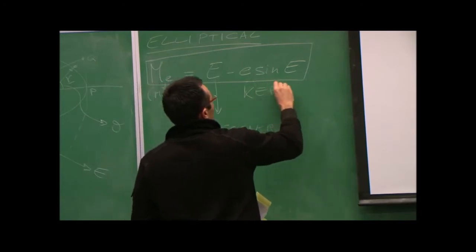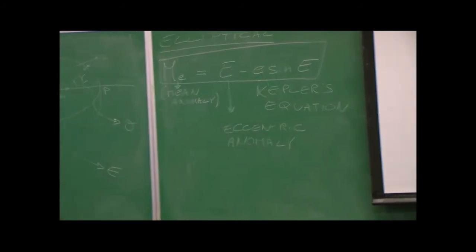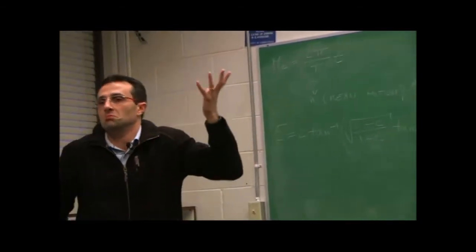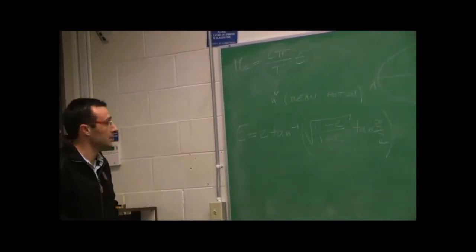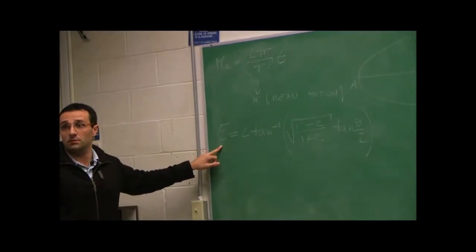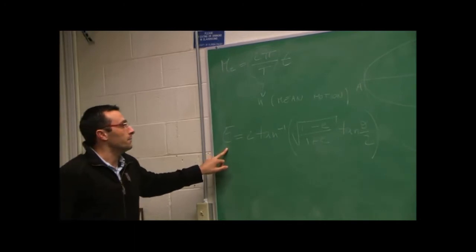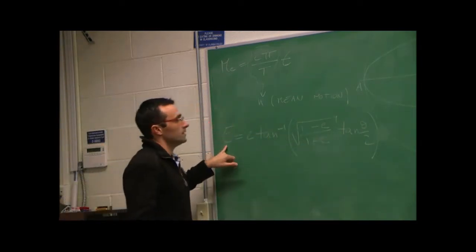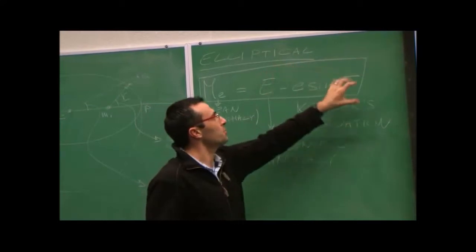Now, if I give you a true anomaly — say theta equals pi over 2 — and you want to compute time, that's a little bit of calculation but not a big deal. Substitute theta in here, you get your eccentric anomaly — everything is in radians. Be careful what kind of angles you're using. Compute the arctangent, get the eccentric anomaly, then use Kepler's equation with your known eccentricity. It gives you the mean anomaly, which gives you time. Give me a theta, I'll give you time right away.